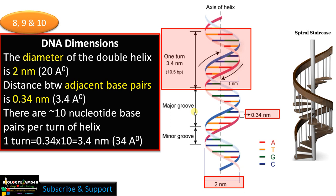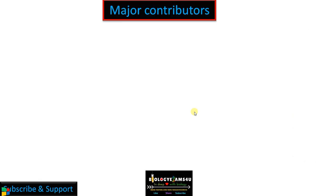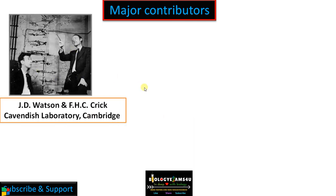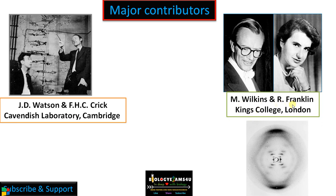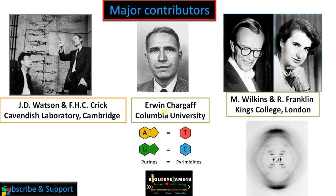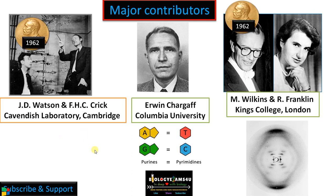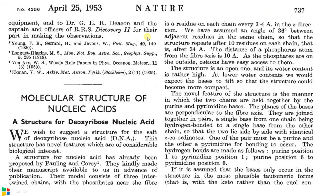Before concluding, the major contributors to the discovery of DNA structure were Maurice Wilkins and Rosalind Franklin, whose X-ray crystallographic picture provided the key clue for the double helical structure. Chargaff's rule provided Watson and Crick with the idea of base orientation and helped explain DNA copying. Watson and Crick, along with Wilkins, were awarded the Nobel Prize in 1962 for this work.